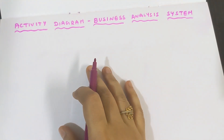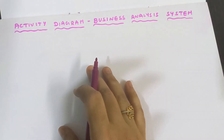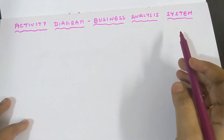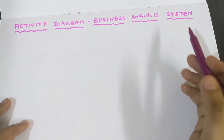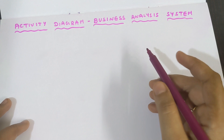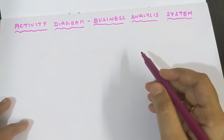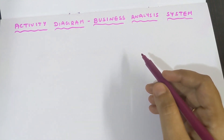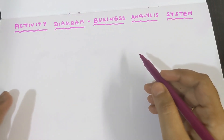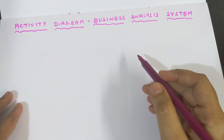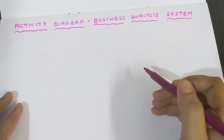In this video, we are going to learn how to draw the activity diagram for the topic business analysis system. Before getting into this video, you need to know what symbols are required in drawing an activity diagram. I have already made a video on the symbols used in drawing the activity diagram, and I have attached the link in the description box. You can first learn the symbols using that video and then continue watching this video for better understanding.